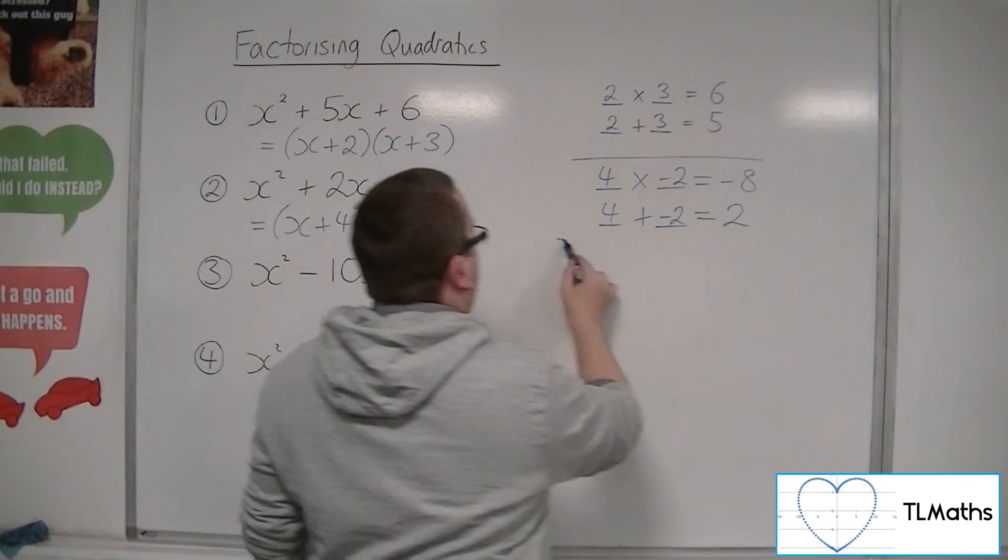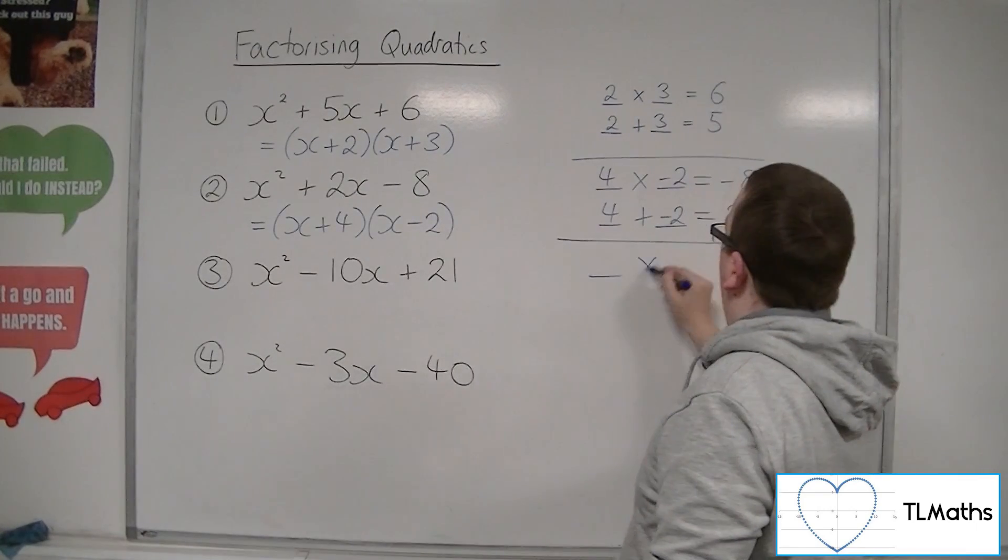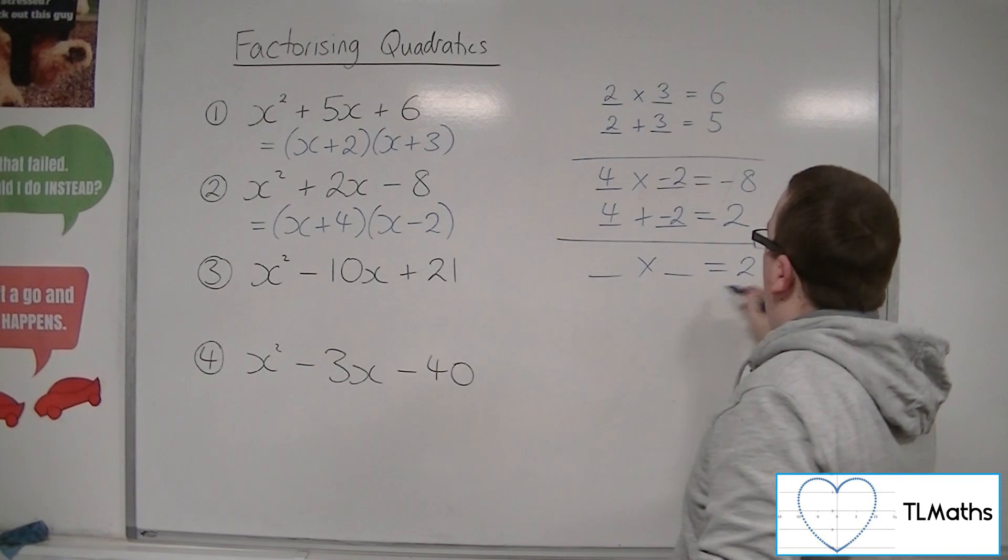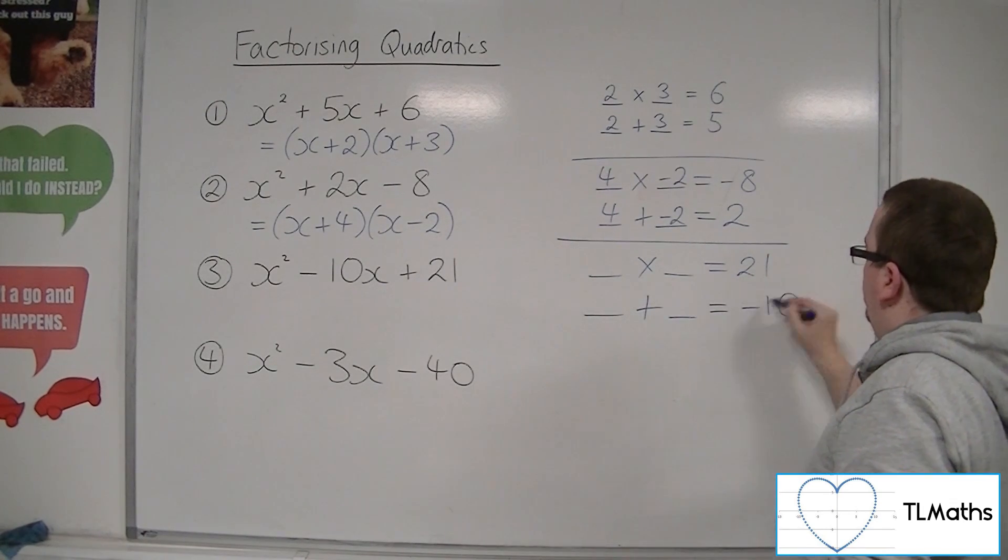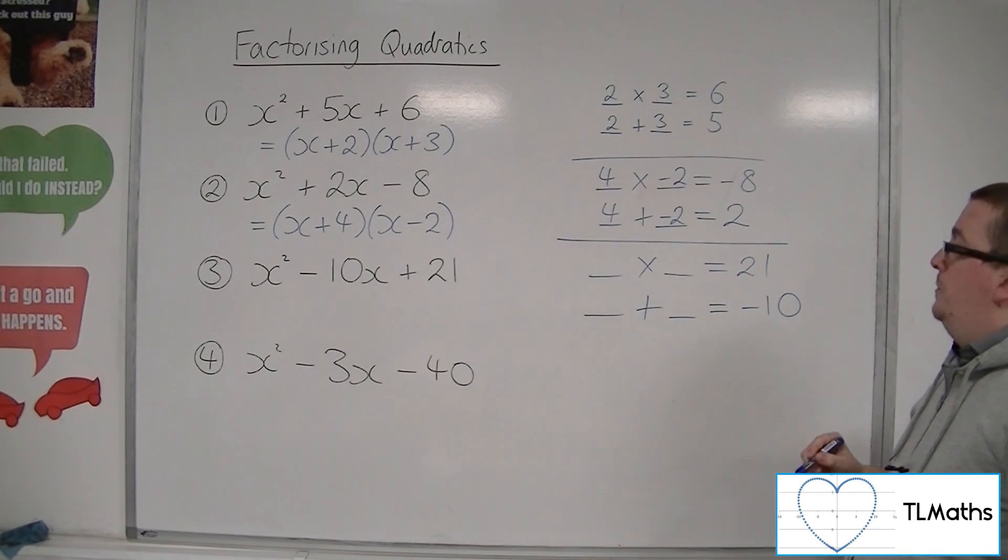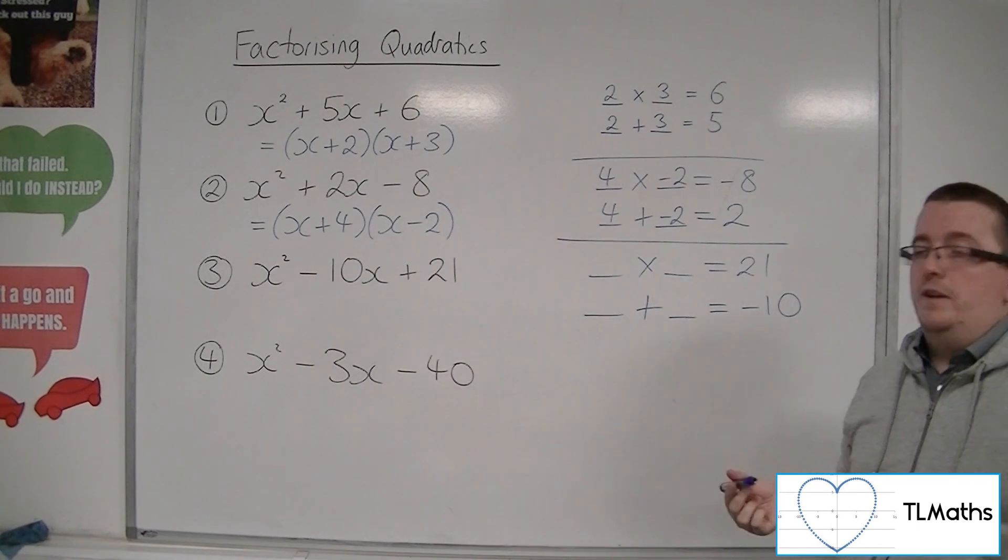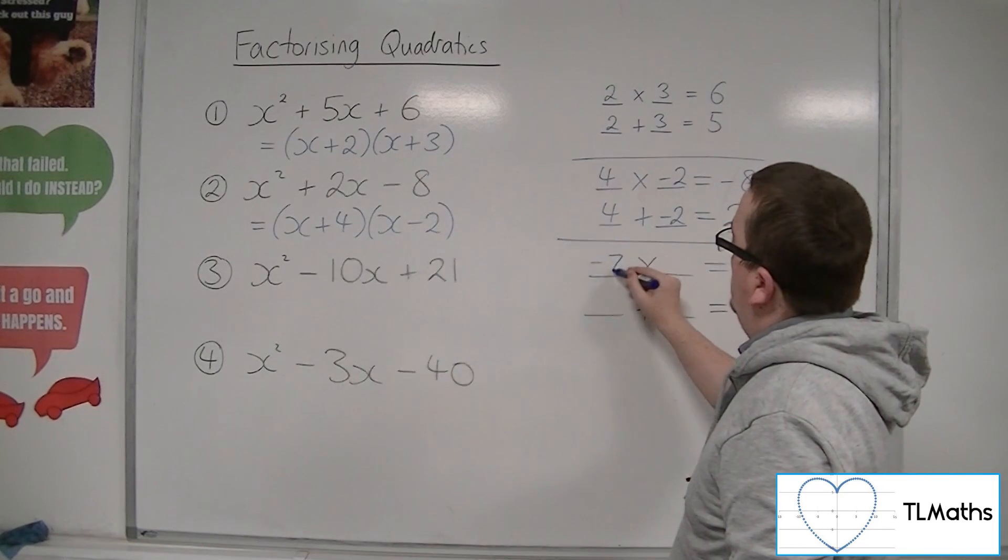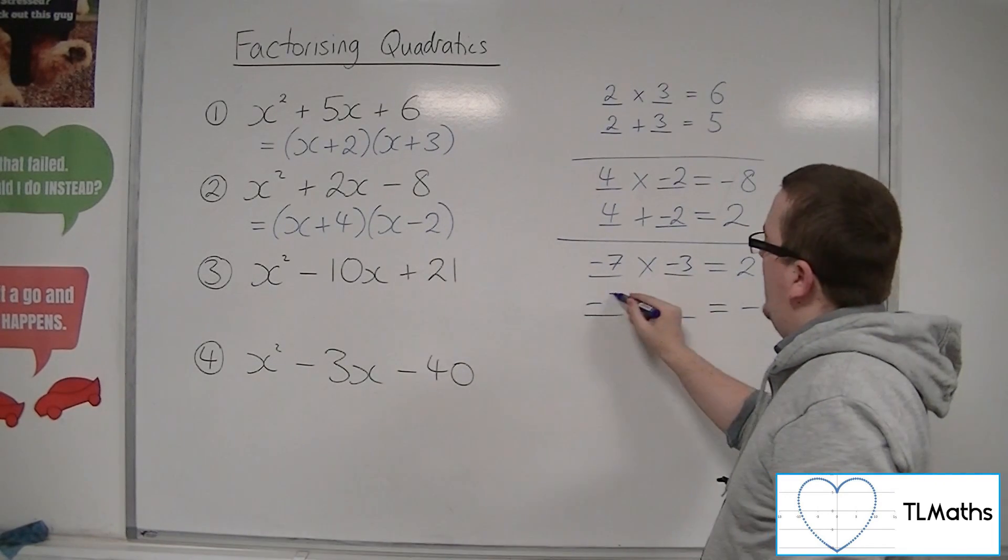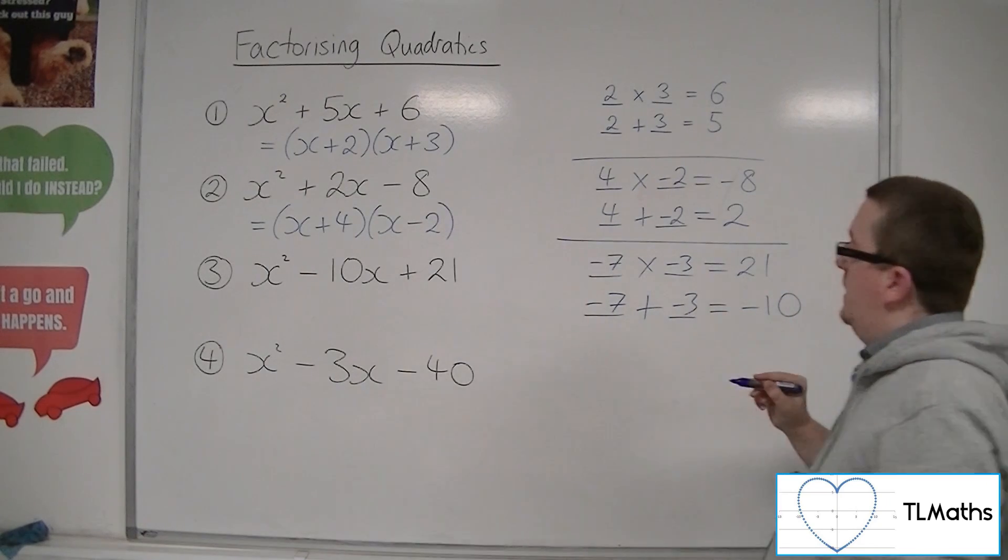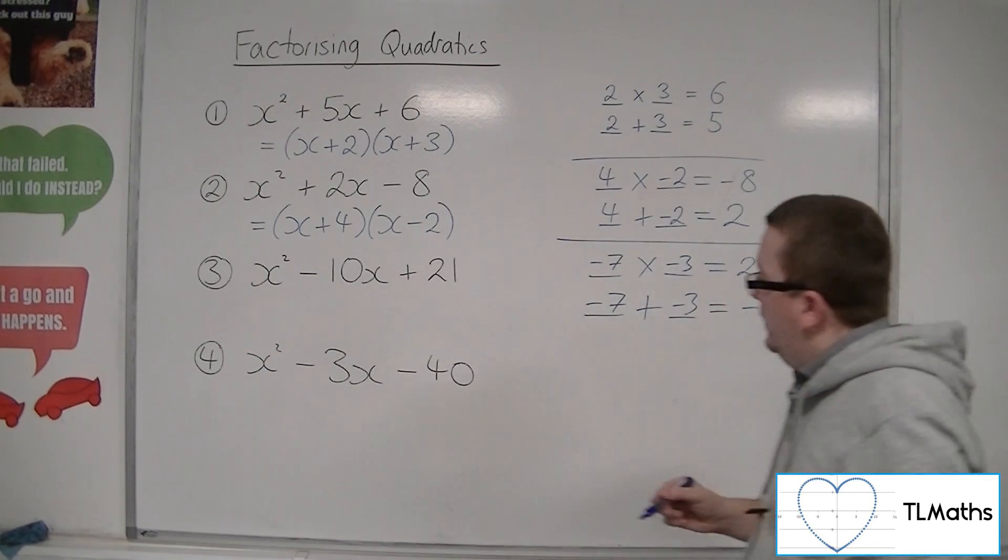So for number 3, two numbers that multiply together to make 21 but add together to make minus 10. And that would have to be minus 7 and minus 3. So minus 7 and minus 3 multiply to make 21 but add together to make minus 10.